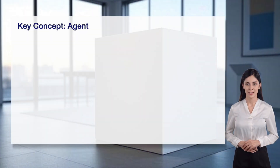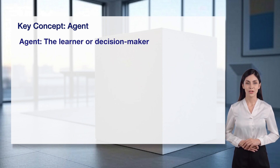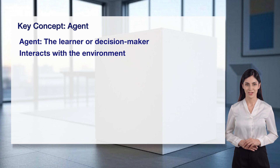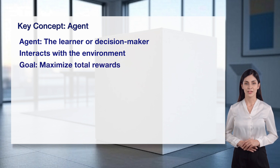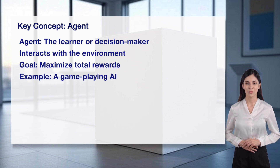Let's explore a key concept in reinforcement learning: the agent. The agent is the learner or decision maker in the RL process, responsible for taking actions. It interacts with the environment by observing states and choosing actions. The agent's goal is to maximize its total rewards over time. For example, a game-playing AI, like one playing chess, acts as the agent, learning to win by earning rewards for good moves.